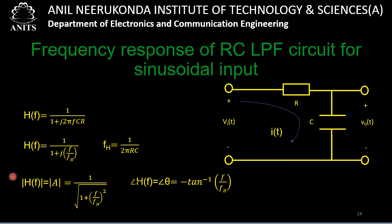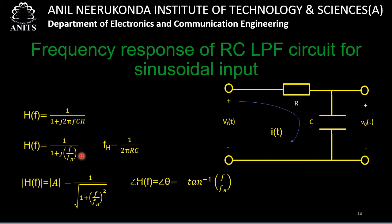The magnitude of H(f) is |H(f)| = 1/√(1 + (f/fH)²), using the formula |a + jb| = √(a² + b²). The phase angle of H(f) is θ = −tan⁻¹(f/fH), since the angle of 1 is 0° and the angle of (1 + j·f/fH) is tan⁻¹(f/fH).